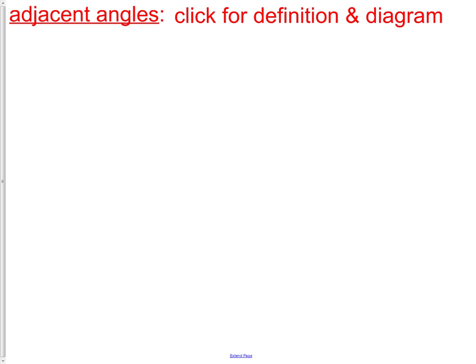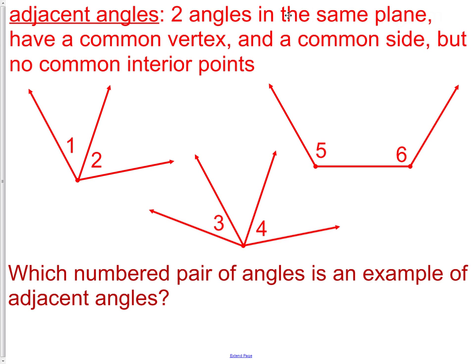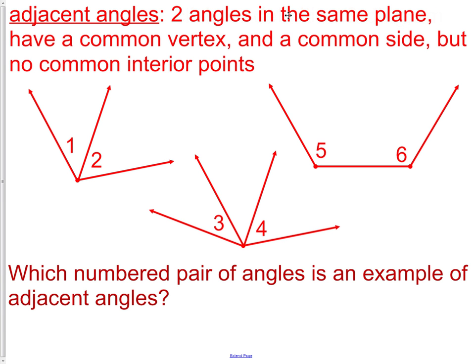Adjacent angles. The word adjacent means next to. So when we have adjacent angles, it is two angles in the same plane that have a common vertex and a common side, but no common interior points. The key to understanding adjacent angles is knowing that they must share a vertex, a side, and that they do not overlap.